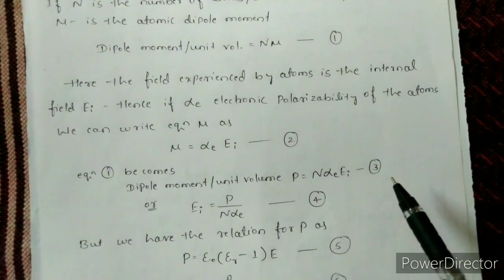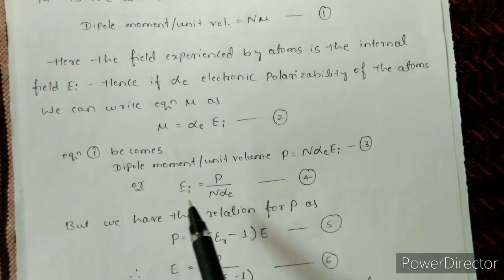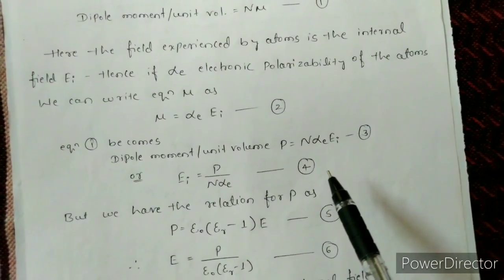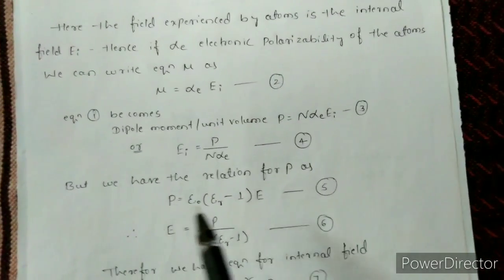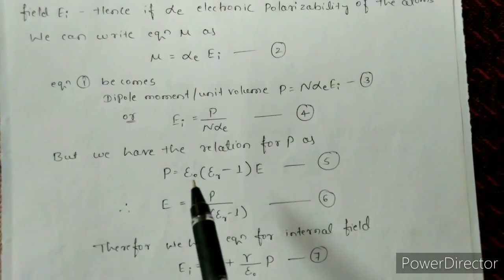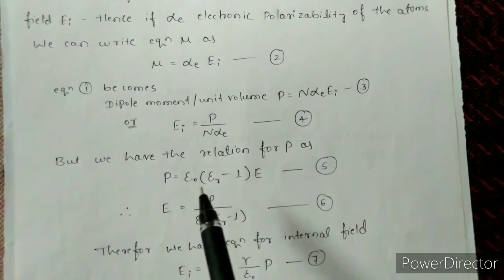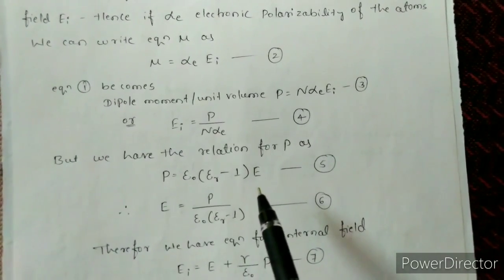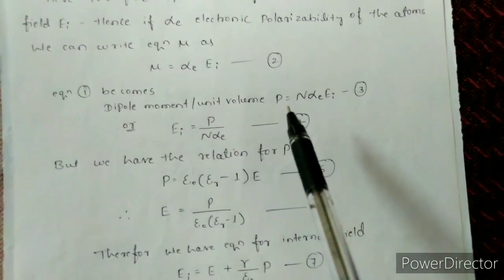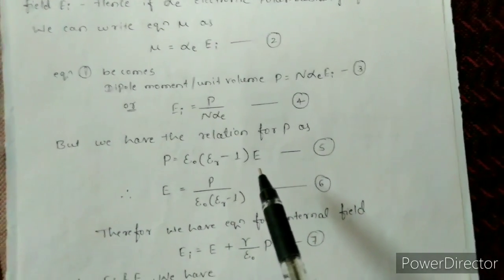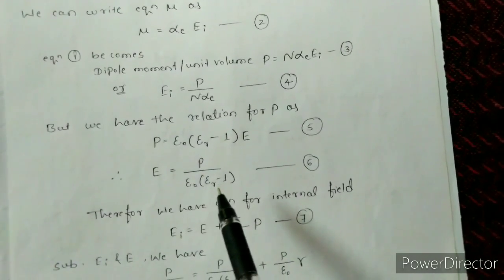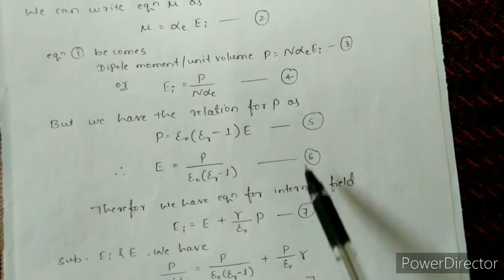From equation 3 we get: EI = P / (N·αE), which is equation 4. We also have the relation P = ε₀·(εᵣ − 1)·E, which is equation 5. Rearranging gives E = P / (ε₀·(εᵣ − 1)), which we call equation 6.